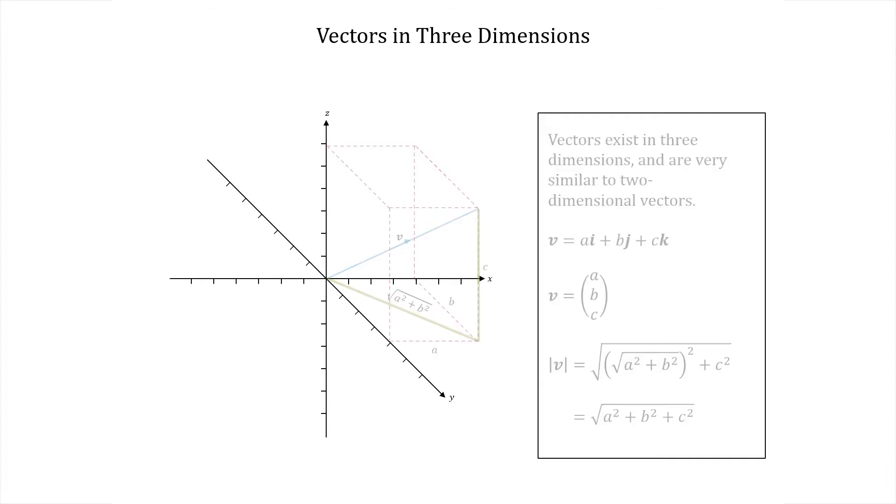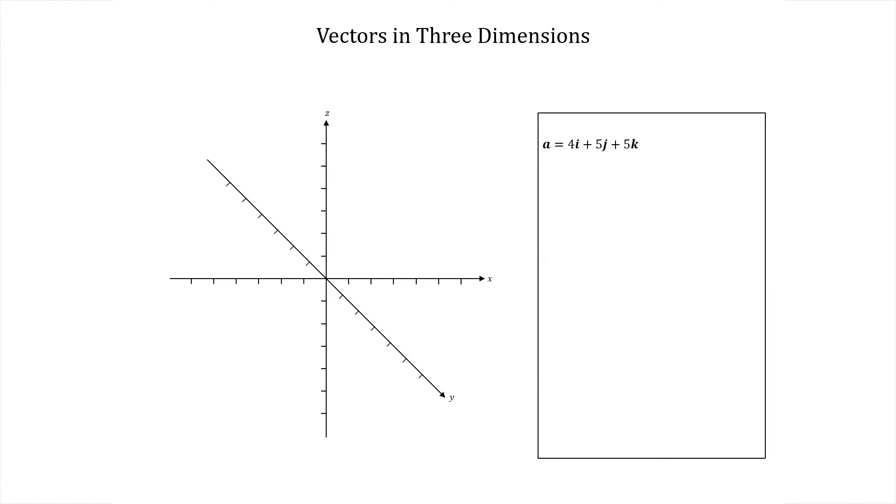Let's take two vectors a equal to 4i plus 5j plus 5k, and b equal to minus 6i plus 3j plus 0k, which is actually just minus 6i plus 3j. On our axes, these vectors would look like this. We'll add in some red lines to clarify the diagram.